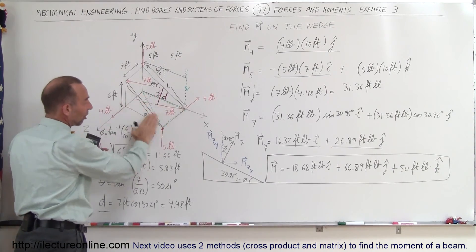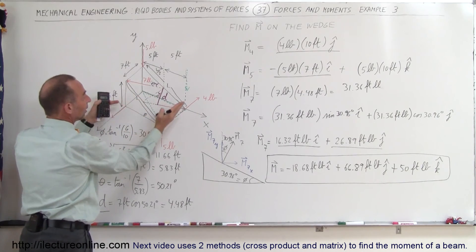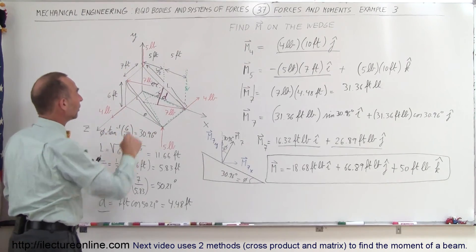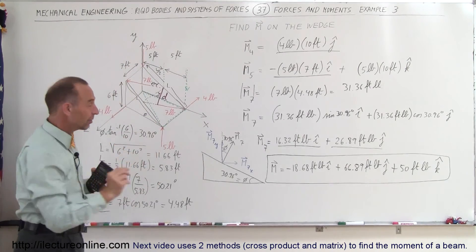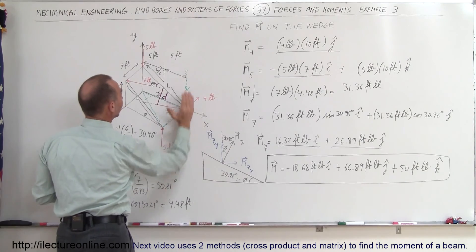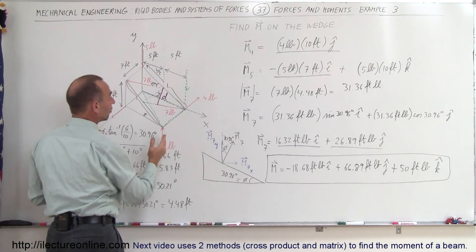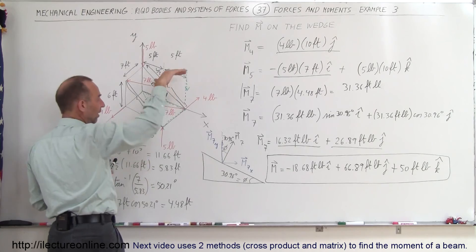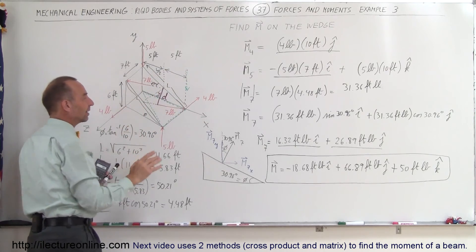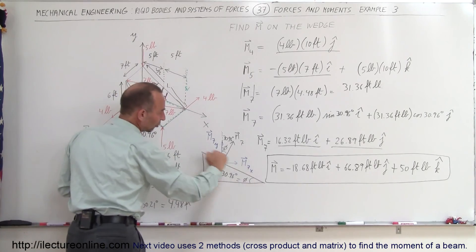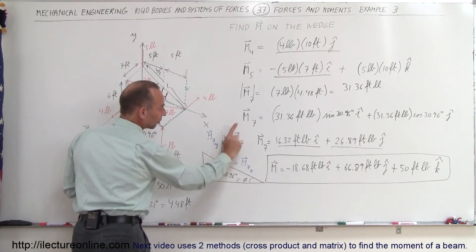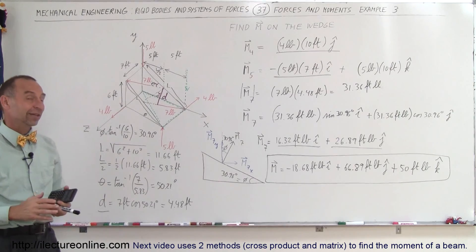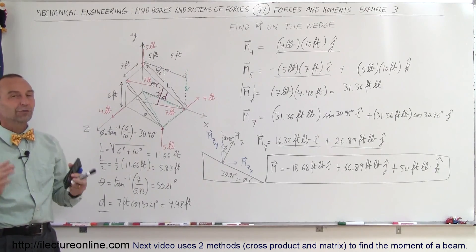The 4-pound couple is easy because it's along the bottom side of the wedge — simply 4 pounds times 10 feet, direction upward. For the 5-pound couple, we found the component in the Z direction by moving a force along that axis, and the component in the negative X direction by moving it the other way. For the 7-pound couple, we found the moment perpendicular to the slant surface and divided it into Y and X components. Adding all components together gives the total moment.